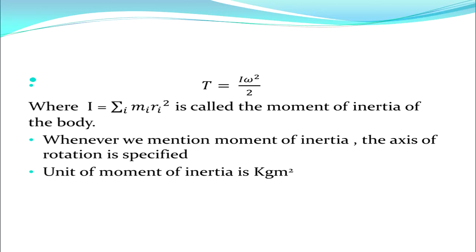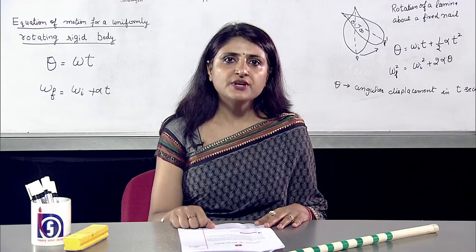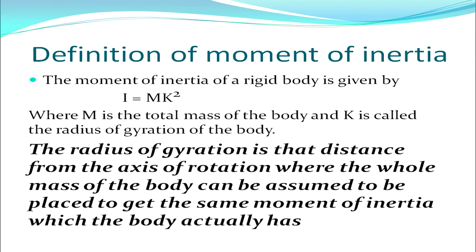The unit of moment of inertia is kilogram meter squared. The moment of inertia of a rigid body is given by I = mk², where m is the total mass of the body and k is called the radius of gyration. The radius of gyration is the distance from the axis of rotation at which the whole mass of the body can be assumed to be concentrated to give the same moment of inertia which the body actually has.